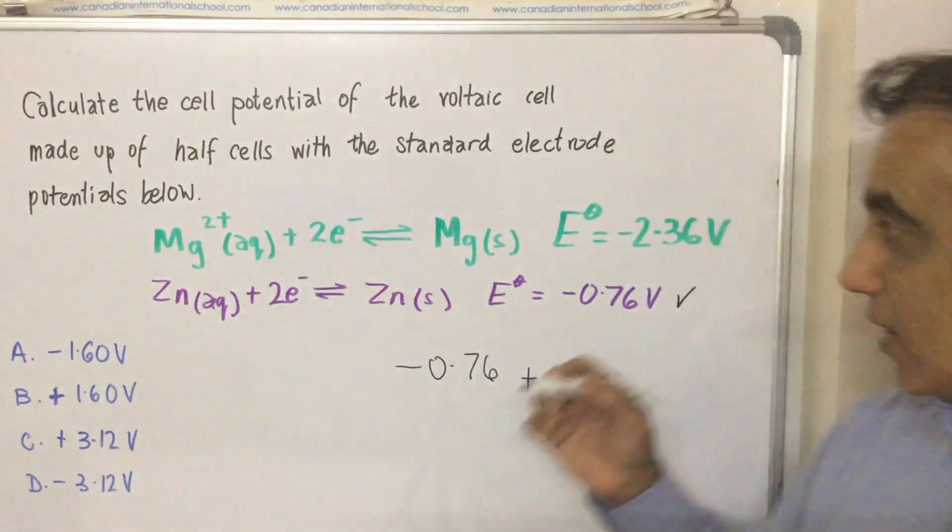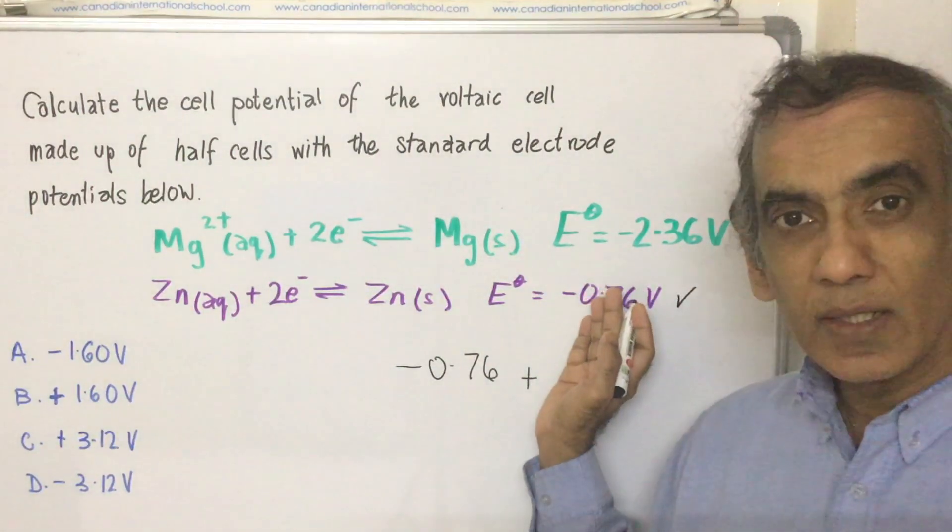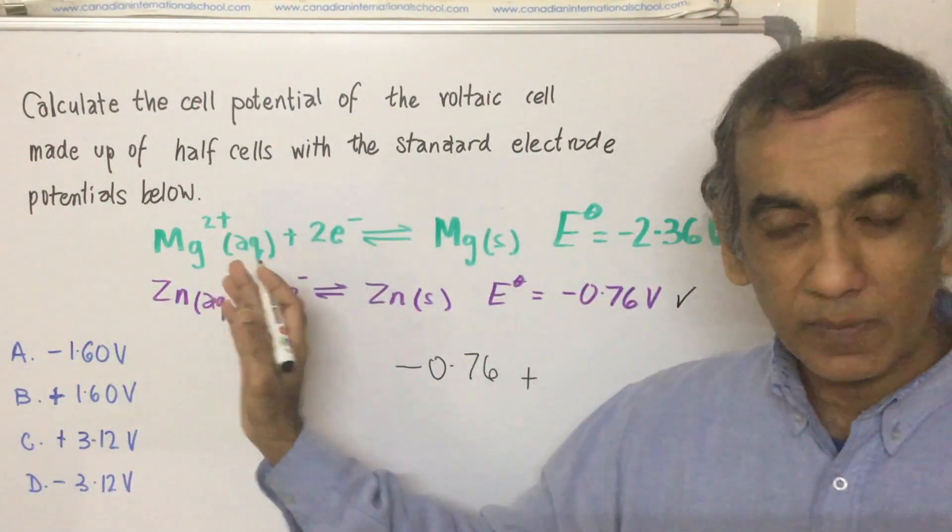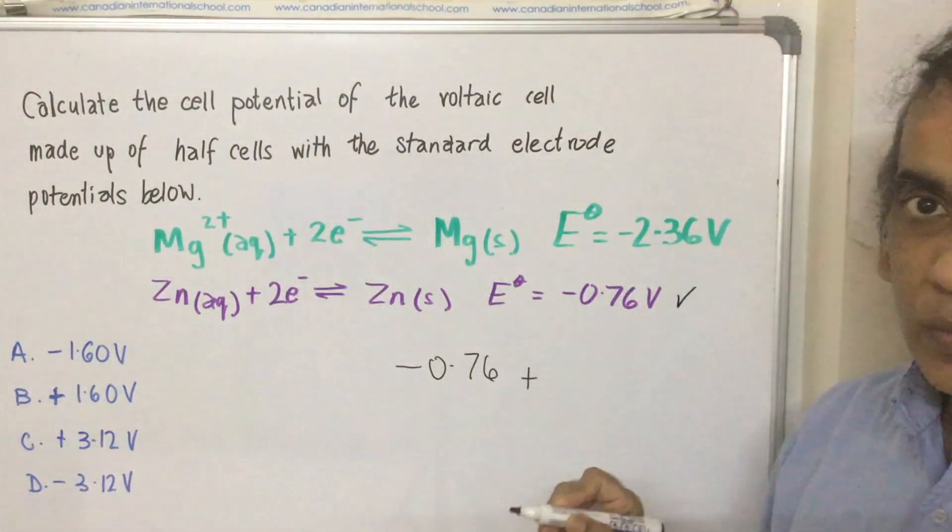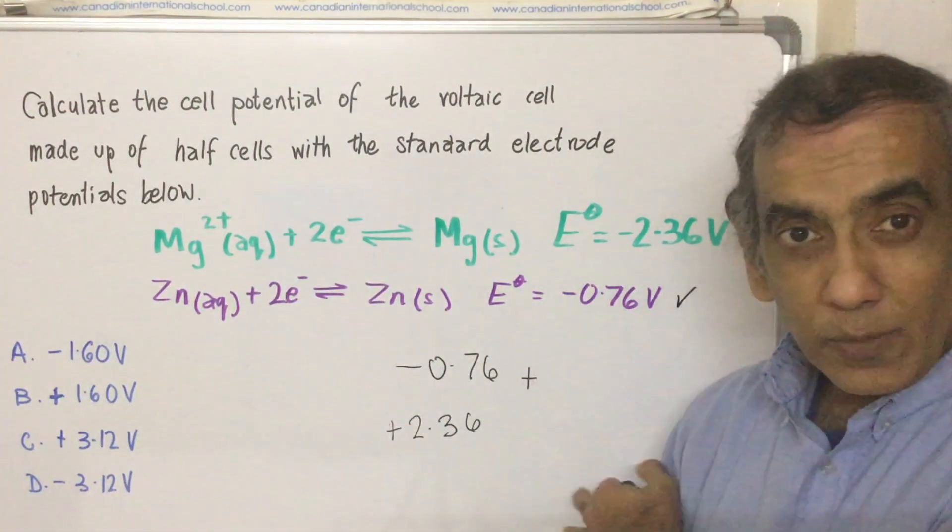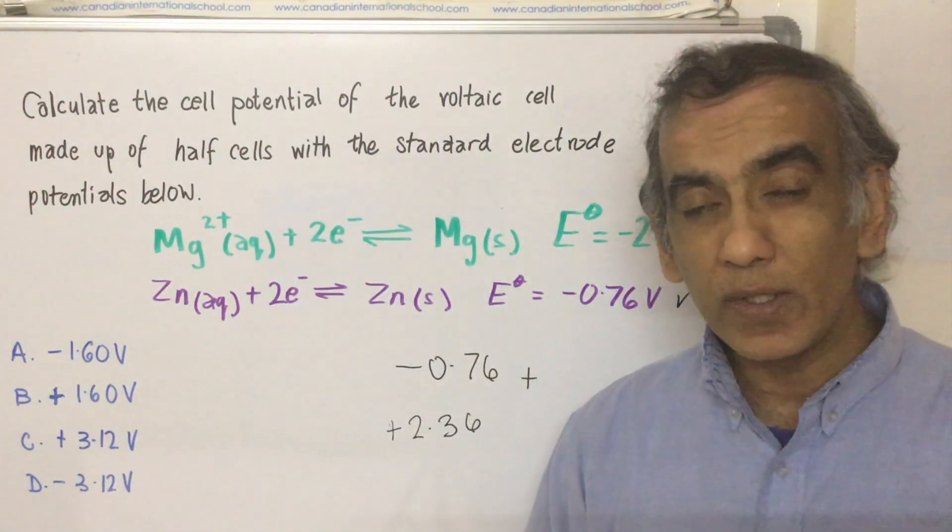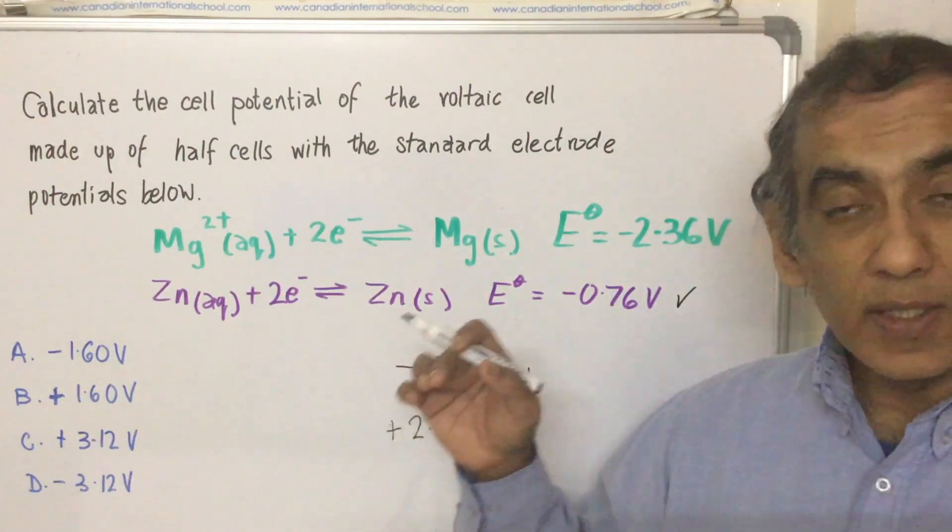So therefore, if this has to be oxidized, then you have to look at this in a reverse direction, which would mean that this sign would become positive 2.36. And then you simply take the sum of these two values and that would come to positive 1.60 volts. So the answer to this question is B.